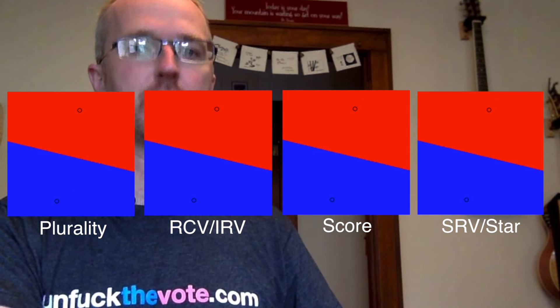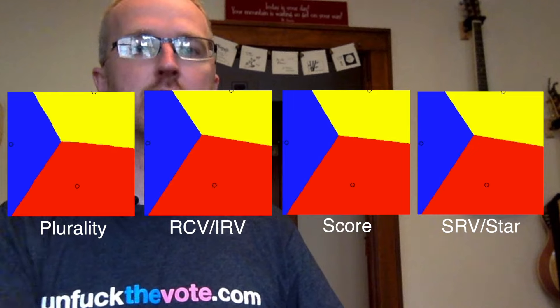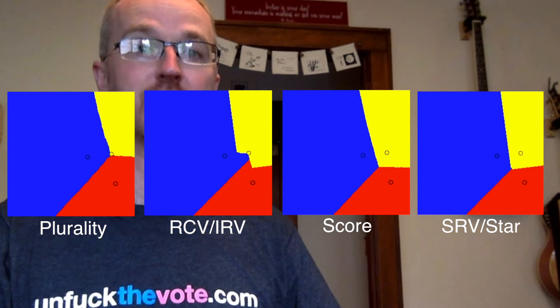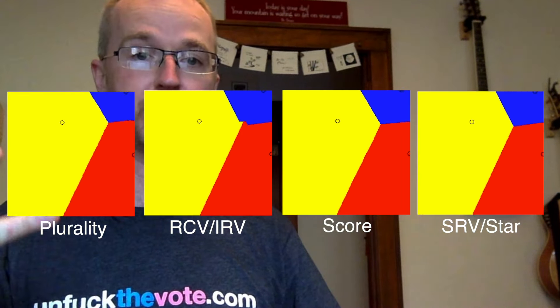What happens when we add a third candidate? Well, shit breaks. It turns out creating a voting method that is actually representative is a non-trivial task every time there are more than two candidates.